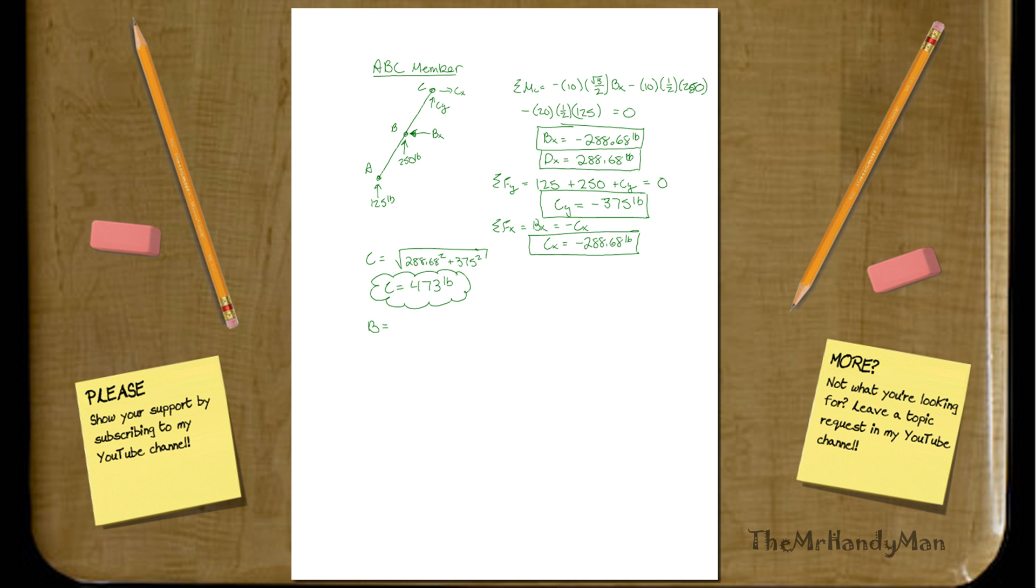What is our reaction at, let's say, B? This would be square root of 250 squared plus 288.68 squared. B is equal to 381.9 pounds. And that is the total force at B.